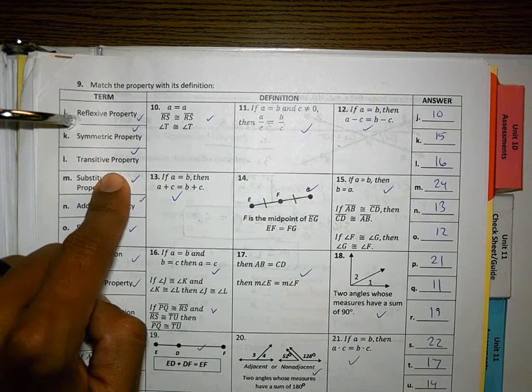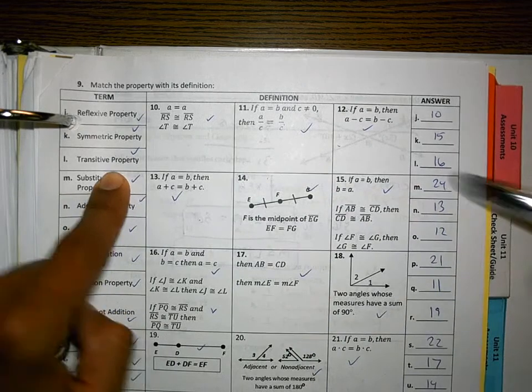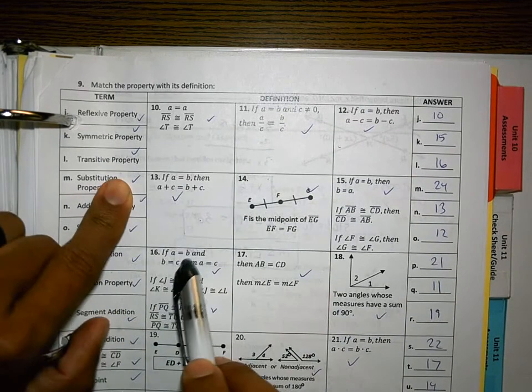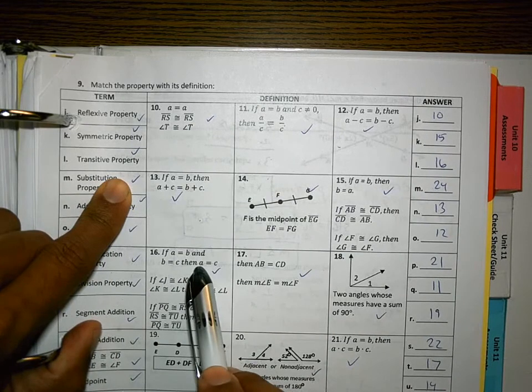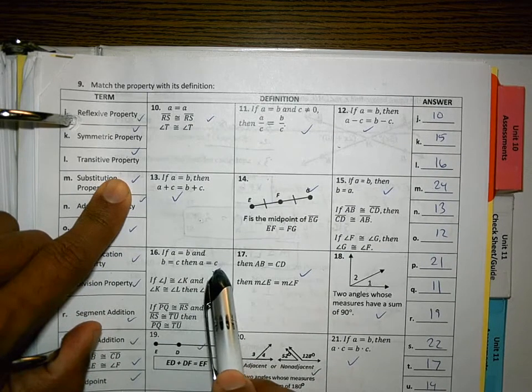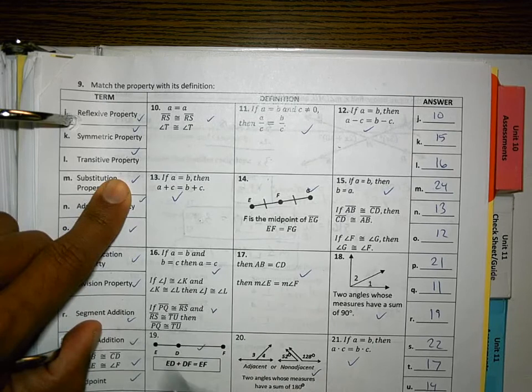L, transitive property, is 16. Transitive, if you know the first thing is congruent to the second thing, and the second thing is congruent to the third thing, then the first thing has to be the same thing as the third thing. That's how transitive property works.